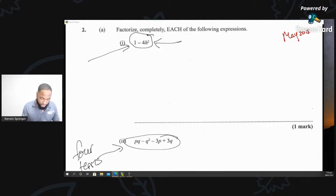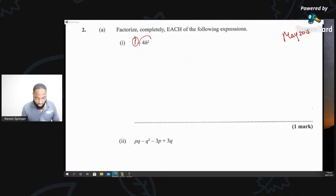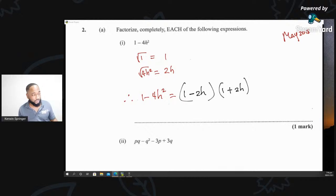This is called the difference of two squares. We're going to get the square root of this and the square of that. You take this and find the square root of 1 is 1, and the square root of 4h². The square root of 4 is 2, and the square root of h² is h. Therefore, 1 - 4h² is equal to, and you take these two numbers and put them side by side. One, 2h, one, 2h, put one as negative, one as positive. That's how it works.